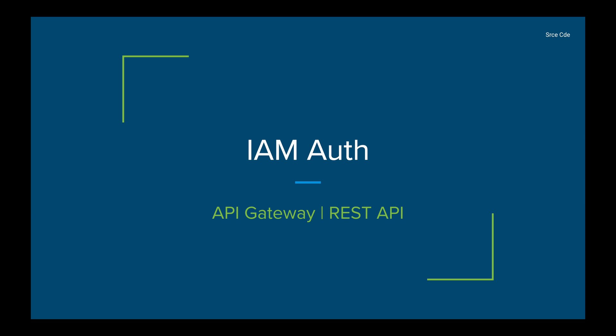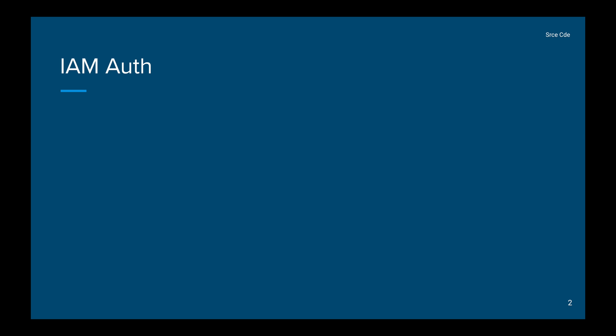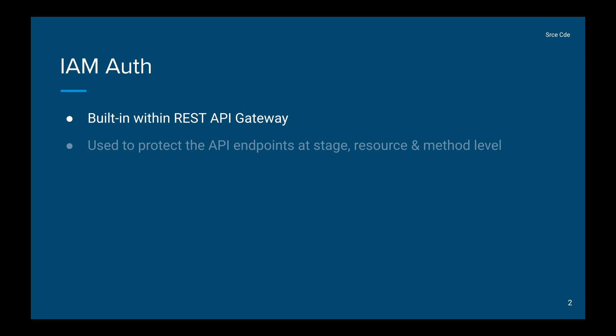When I say API gateway, I'm referring to the REST API — this video is in reference to the REST API and not the HTTP or WebSocket API. IAM authorization is built in within the REST API gateway and we don't have to do any additional configuration to enable it — we simply need to turn it on. We can use IAM authorization to protect API endpoints at the stage level, resource level, as well as the method level.